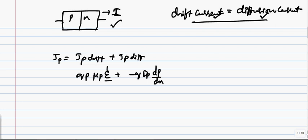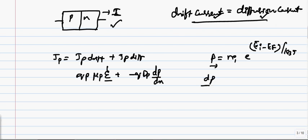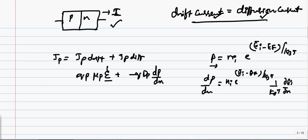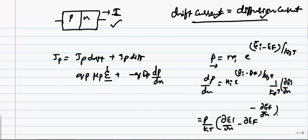Let us keep these values and see what the equation for P is. We have seen this before: P equals NI times E power (EI minus EF) over KBT. Now if you see dP by dX, dP over dX will be equal to NI times E power (EI minus EF) over KBT, times 1 over KBT times (∂EI/∂X minus ∂EF/∂X). We can write this dP by dX as equal to P over KT times (∂EI/∂X minus ∂EF/∂X).